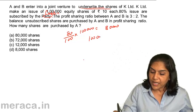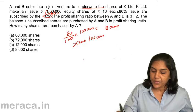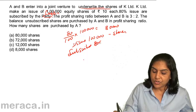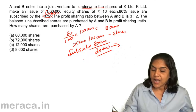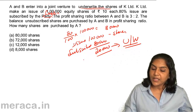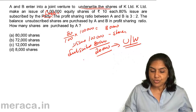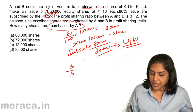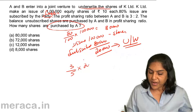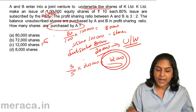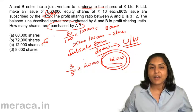What is the balance? The total issue is 1 lakh shares, subscribed 80,000 shares, so the balance 20,000 shares has to be taken up by the underwriter. Assuming the profit sharing ratio is 3:2, how many shares have to be taken up by A? That means 3/5 and 2/5 are the shares of A and B respectively. 3/5 of 20,000 gives 12,000 shares to be taken up by A. The correct answer should be option C — 12,000 shares.